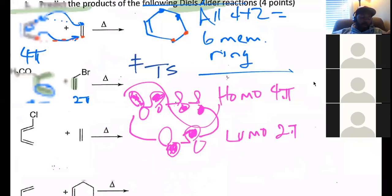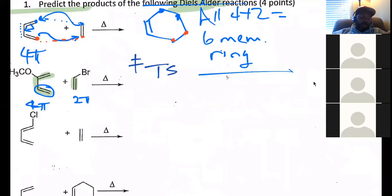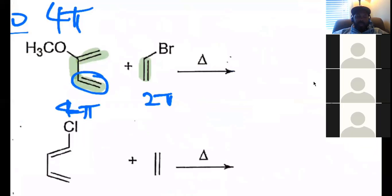So I'm going to erase this part. This is being recorded, so don't panic. And we're going to go back to the example that we were just doing. All right. So this is my 4-pi system, and this is my 2-pi system. All right. So how would you start the mechanism off? Because it never changes.